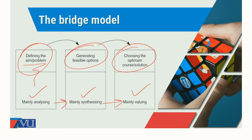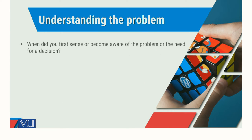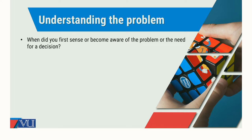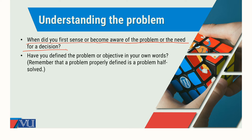Our mind functions are involved when we define a particular problem and identify relevant solutions. There are different things to focus upon — for example, when did you first sense or become aware of the problem or the need for a decision? When did you decide to make a decision and determine the problem is no longer bearable? Have you defined the problem and objectives in a SMART fashion, in your own words — both qualitatively and quantitatively? Remember, a problem properly defined is a problem half solved.